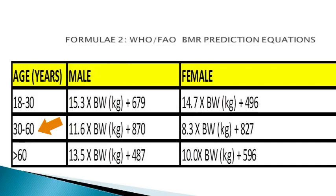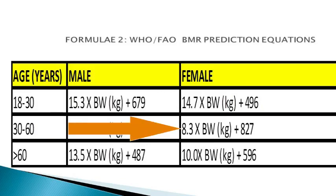their basal metabolic rate equals 11.6 multiplied by body weight in kilograms, the product of which is added to 870 kilocalories. For female clients aged between 30 and 60 years, their basal metabolic rate equals 8.3 multiplied by body weight in kilograms, the product of which is added to 827 kilocalories.